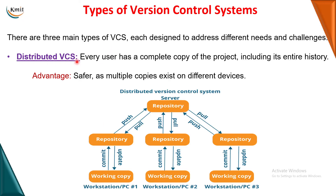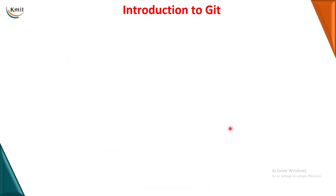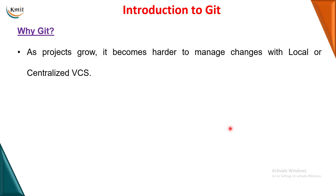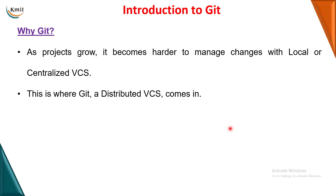The third type is the distributed version control system. Here we save the project files not only in local systems but also in remote systems, so you have multiple copies of the project in different locations. Even if the server or any local system fails, you can take a copy from any other system. As project size increases and code lines grow, managing changes becomes very difficult, which is why we use the distributed version control system.